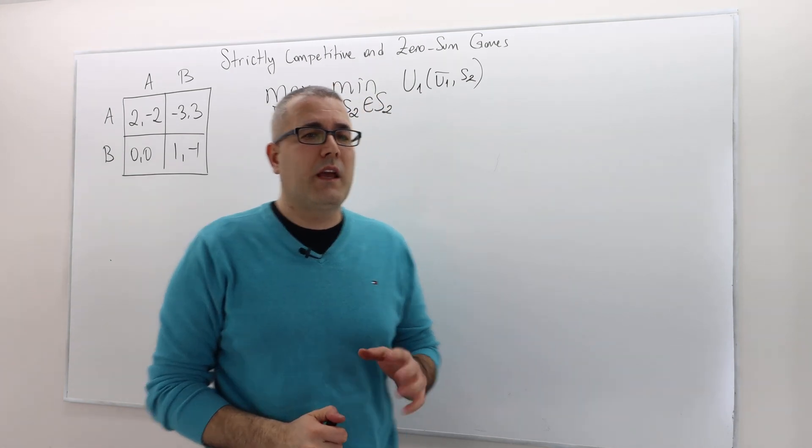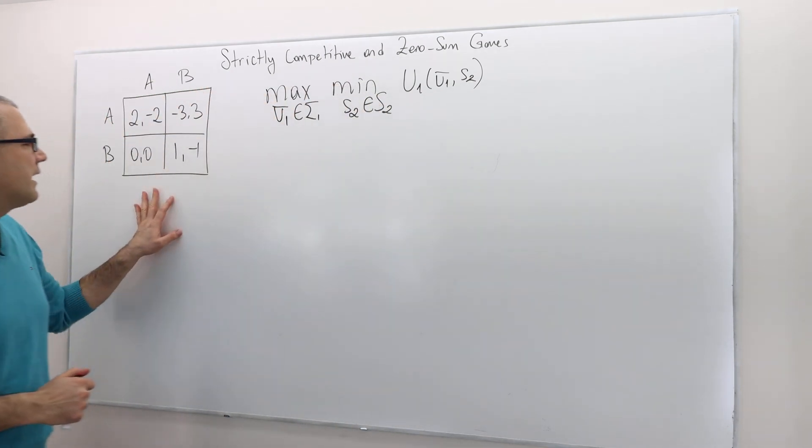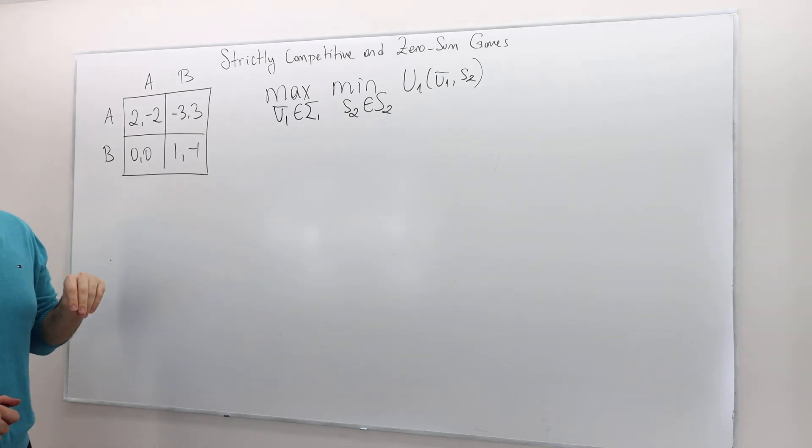Now I'm going to look at this numerical example. I have a zero-sum game and I'm going to find the max-min value and the min-max value of this game and show that they're equal. I'm going to do this for player one. The game is not symmetric. The max-min and the min-max value for player two will be different, probably, but I am going to leave that as an exercise for you.